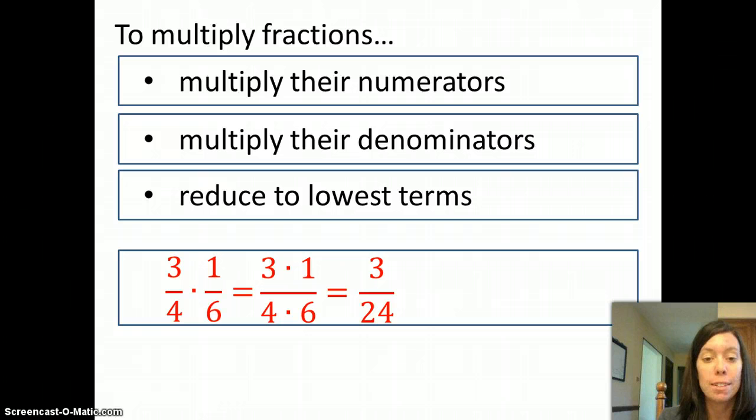But that result is not in lowest terms because there is a number that goes evenly into 3 and 24 and that number is 3. So I divide top and bottom both by 3 and then I'll have my answer in lowest terms, 1/8.